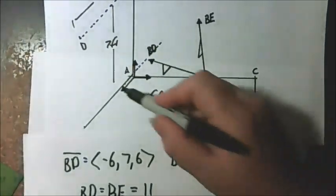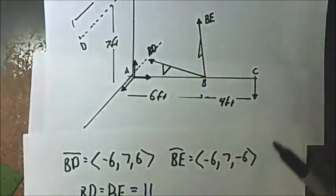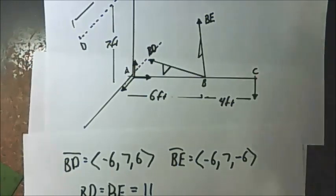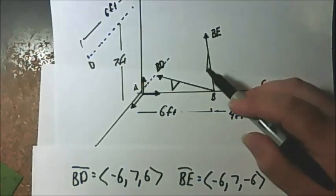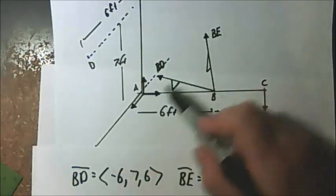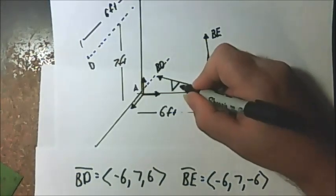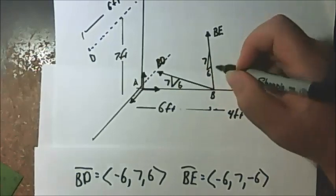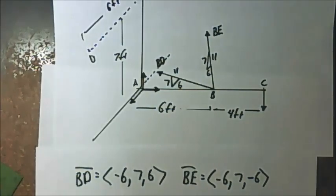Notice we want to take the moment about this boom, which is along the x-axis. The x-coordinate of these vectors is not going to affect our moment — it's parallel to the x-axis so we won't worry about that. When I draw these triangles, I'm only going to concern myself with the z-component and the y-component. So these are both set up as 6, 7, with magnitude 11 because we still have to square all three of them.